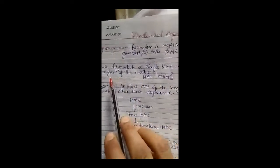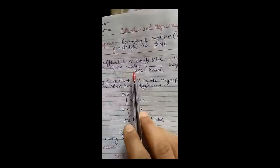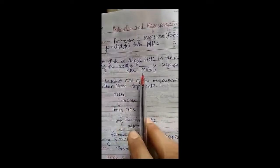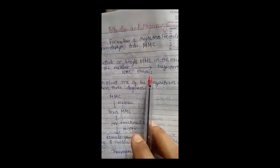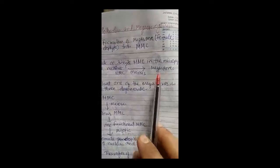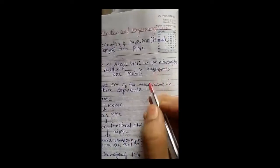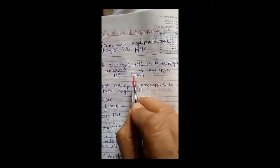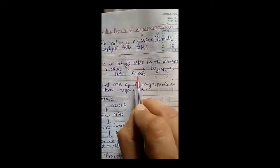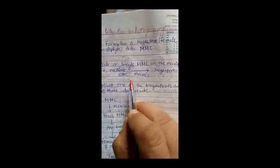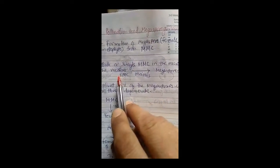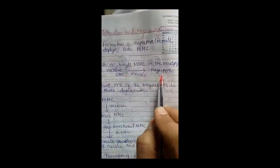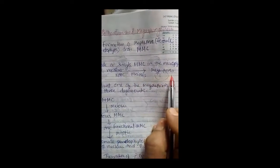This megaspore mother cell, inside the nucellus, undergoes meiosis to form 4 megaspores — by meiotic cell division. So what will be the ploidy of the megaspore mother cell and the megaspores?